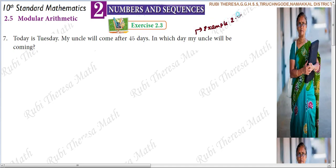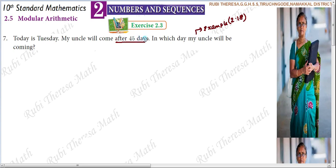Example 2.18: Kala and Vani have birthdays and today is Monday. I celebrated my birthday 75 days ago. For our problem, today is Tuesday and after 45 days we need to find what day it will be.